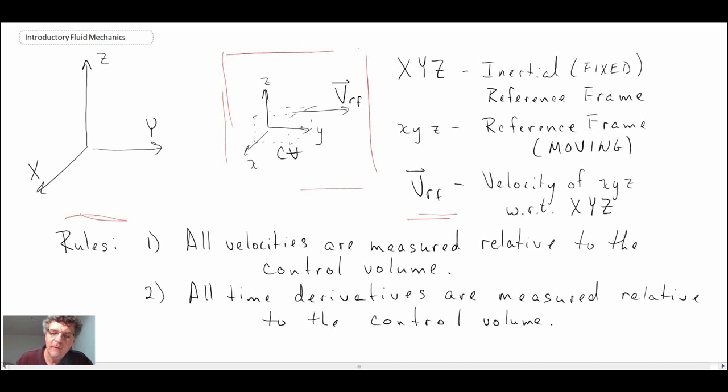The first one is that all velocities that are coming into or leaving from the control volume are measured relative to the control volume. So we have to look at relative velocity. And so if we have a velocity that is in the inertial frame, we have to then convert that and look at the relative velocity with respect to the control volume. And the second one is that all time derivatives are measured relative to the control volume as well. So those are some of the basic rules we have for a control volume that's moving at linear velocity.